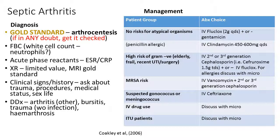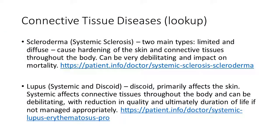Management of septic arthritis is directed by local guidelines but ultimately involves long-term antibiotic therapy — usually intravenously initially for several weeks until vital signs are controlled, then oral antibiotics in the second phase of treatment. These disorders in detail haven't been covered here but links are provided for further reading around connective tissue diseases. Rheumatology covers over 250 immunological and inflammatory conditions, so it's impossible to go through them all.